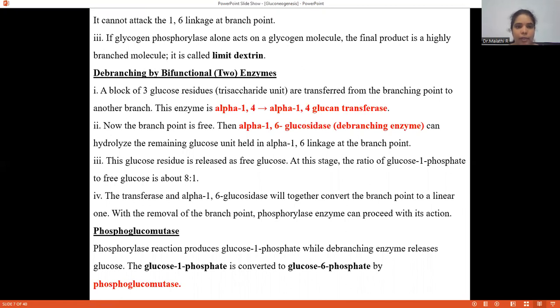If glycogen phosphorylase alone acts on a glycogen molecule, the final product is a highly branched molecule, a limit dextrin. The debranching enzyme is a bifunctional enzyme with alpha-1,4 to alpha-1,4 glucan transferase activity and also alpha-1,6 glucosidase debranching activity. The glucose residue is released as free glucose.